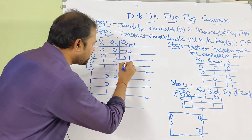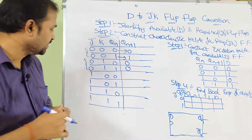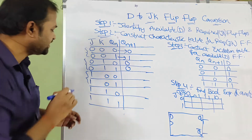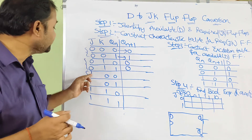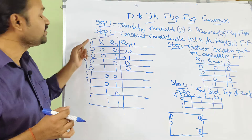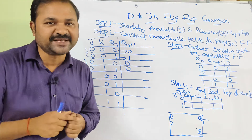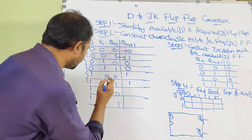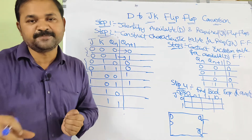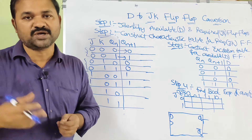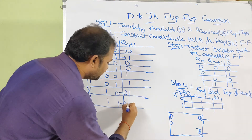In the 0,1 combination, the output is reset, so reset means 0. For the next two combinations where J=1 and K=0: J means set, so the output is 1. For the last two combinations where J=1 and K=1, the output is simply toggled — complemented — so 0 becomes 1 and 1 becomes 0.